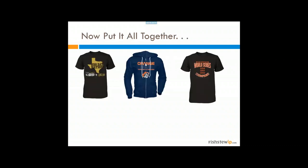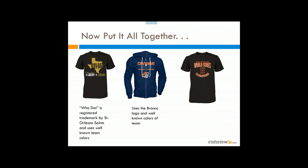Here are three shirt designs. 'Who Dat Nation' uses a registered trademark of the New Orleans Saints and well-known team colors, raising both trademark and color issues. 'Orange and Blue Through and Through' uses the Bronco logo and well-known team colors. 'San Francisco World Series Champions' references a registered trademark and uses well-known Giants colors. All three examples could cause you serious issues if you're using them in your personalization work.